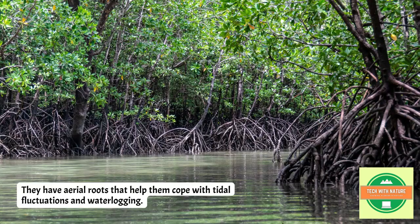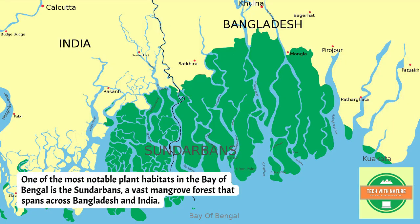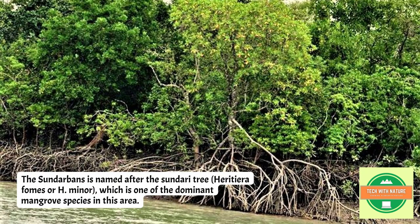Mangroves are trees or shrubs that grow in saline or brackish water along the coastline and estuaries. They have aerial roots that help them cope with tidal fluctuation and waterlogging, and they provide habitat and nursery grounds for many aquatic animals as well as protection from erosion and storms. One of the most notable plant habitats in the Bay of Bengal is the Sundarbans, a vast mangrove forest spanning Bangladesh and India, named after the sundari tree, which is one of the most dominant mangrove species in the area.